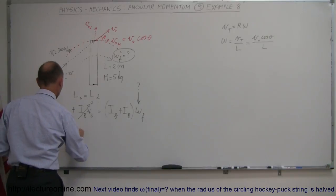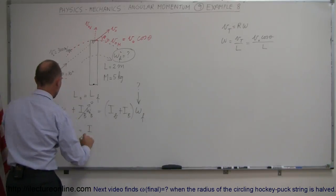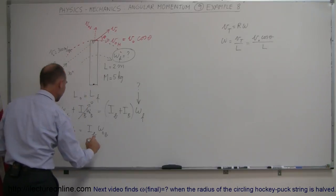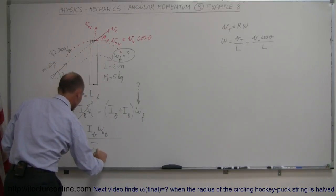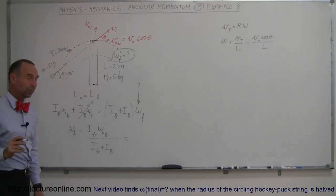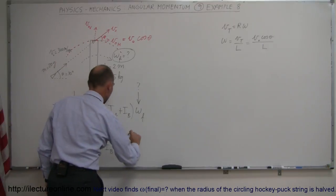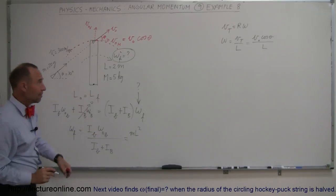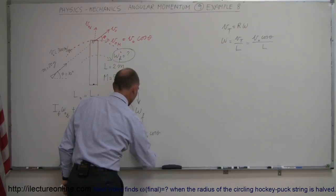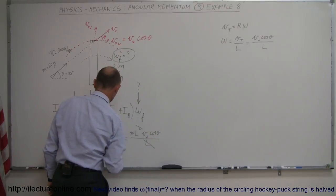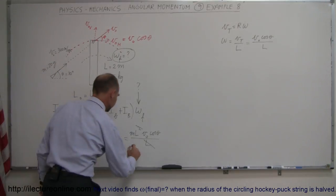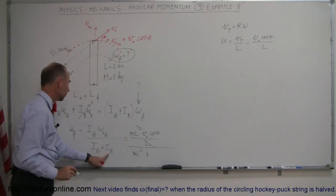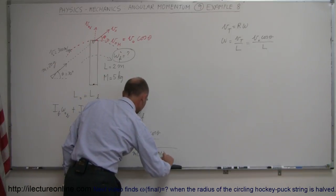Rearranging, omega-final equals the moment of inertia of the bullet times the initial angular velocity of the bullet — which is v-initial times cosine of theta divided by l — all divided by the moment of inertia of the bullet plus the moment of inertia of the beam. Plugging in: I for the bullet is m times l-squared, and the initial angular velocity is v-initial times cosine of theta divided by l. Notice that one l in the numerator will cancel with one l from l-squared. The denominator is I-bullet which is m times l-squared, plus I-beam which is one-third times mass times l-squared.